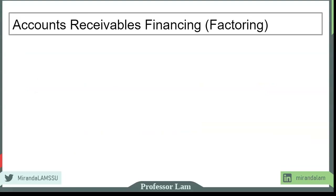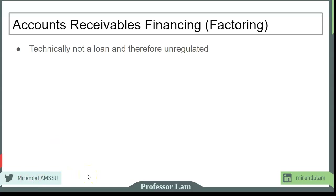Let's take a look at another form of financing called factoring. Factoring is a way to convert your accounts receivable into cash quickly. Technically it is not considered a loan because it is not regulated — the way it is interpreted is that you're actually selling the accounts receivable to the financing company. There are different types: recourse or non-recourse. In a recourse factoring contract, if your customers do not pay, the financing company can come back to you to seek payment. In a non-recourse contract, if your customers don't pay, the losses are attributed to the financing company.